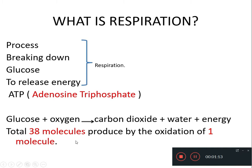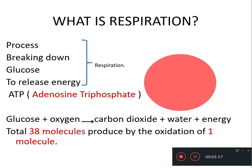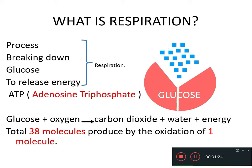What is respiration? The process of breaking down of glucose to release energy is called respiration. The energy is in the form of ATP — adenosine triphosphate. The equation for the respiration process is: glucose plus oxygen gives us carbon dioxide plus water and energy. Total 38 ATP molecules are produced by the oxidation of one glucose molecule.